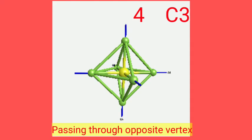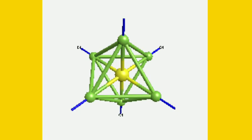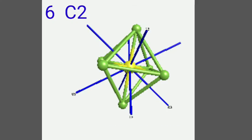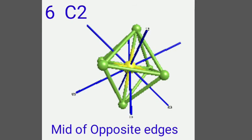We can count 12 edges and there are 8 equilateral faces. Sulfur is in the center of the octahedron. We can see 4 C3 proper axes — they pass through opposite vertex atoms. The C4 axes are shown by blue color lines passing through opposite vertices, and we can see 4 C3 axes passing through the centers of opposite faces.